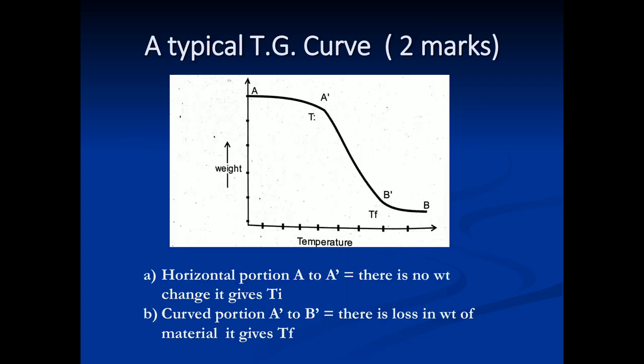A typical TG curve - this is asked for two marks from exam point of view. The horizontal portion A to A' shows there is no weight change; it gives Ti (initial temperature). The curved portion A' to B' shows loss in weight of material; it gives Tf (final temperature).